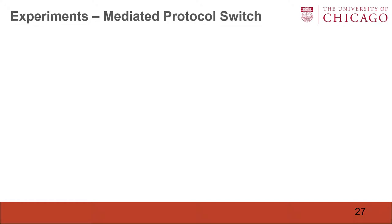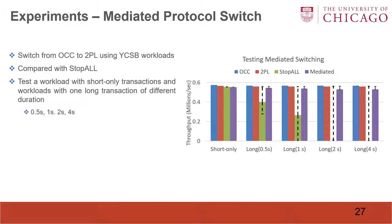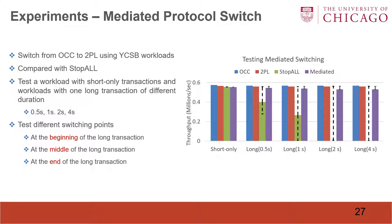Next, we perform a test of the mediated protocol switch. We perform a switch from OCC to two-phase locking using YCSB workloads and compare with the stop-all approach. We test a workload with short-only transactions and workloads with one long transaction of different durations, and also test different switching points. We find that the mediated approach can maintain good throughput throughout the switch process, but the stop-all approach performance is bad because it cannot receive new transactions during the switch process.